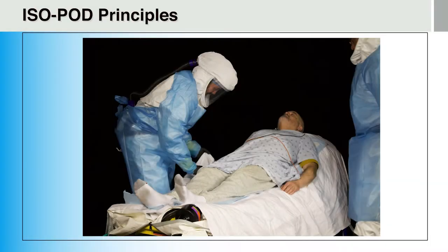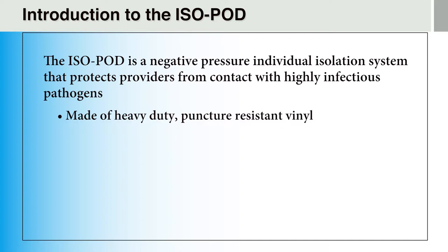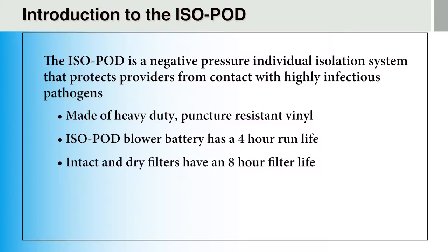Some jurisdictions and designated transport units use commercial patient containment systems called isopods when transporting patients under investigation for highly infectious diseases. In the image seen here, the patient is being prepared to be put in the isopod and the providers are wearing full Ebola PPE. We will demonstrate the procedures for placing a patient in an isopod and discuss strategies for the event of isopod and PAPR failures. The isopod is a negative pressure, individual isolation system that protects providers from contact with highly infectious pathogens and is made of heavy-duty, puncture-resistant vinyl. The blower batteries have a 4-hour run life and the filters have an 8-hour filter life.